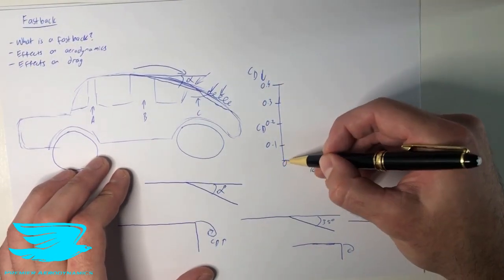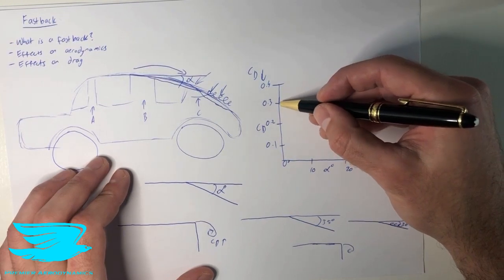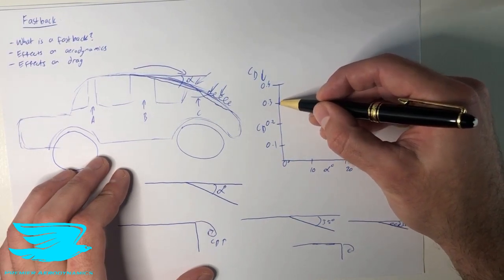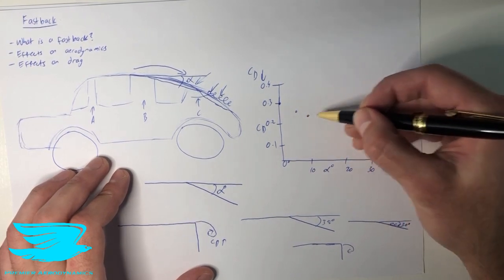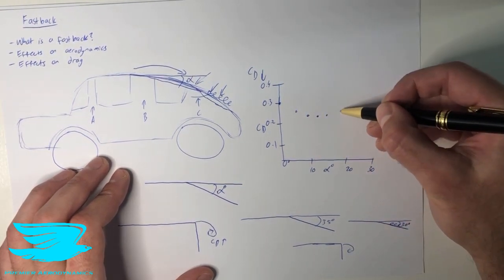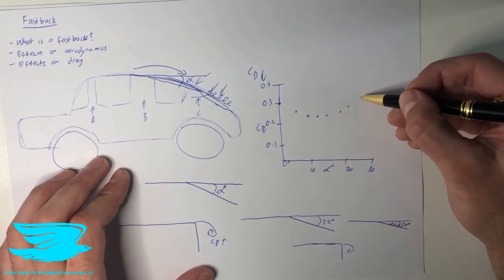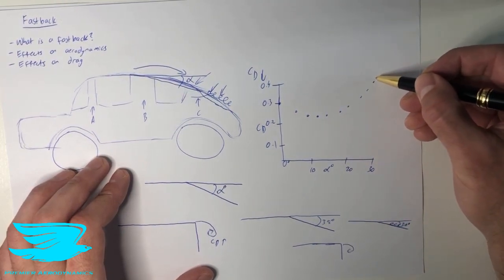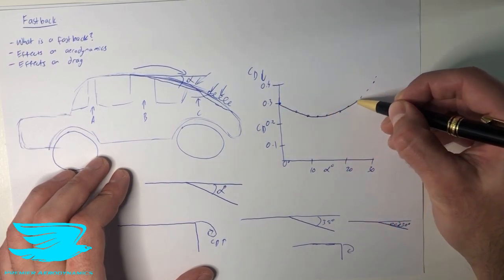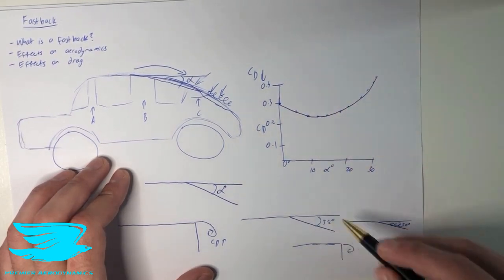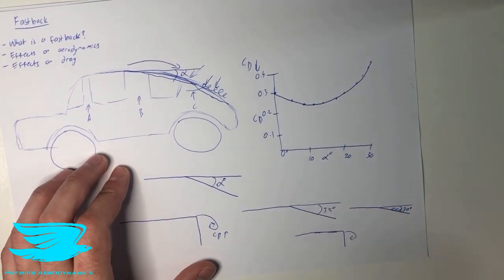When we have a 0 degree angle of attack, the drag coefficient might be about here. Then when we start reducing it, it will start to reduce as well. And then it will start to go back up a little bit. And then once we get to 30 degrees, we're at the maximum here. So let's draw a line like this. And then, as I mentioned here, the vortices are no longer present at about 35 degrees.